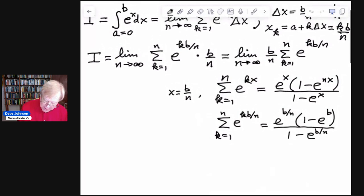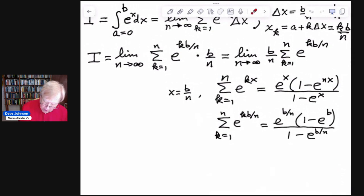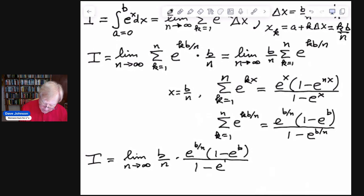So if we substitute that in for this, then what we get is I is equal to limit as n goes to infinity, b over n times, now the summation becomes e to the b over n times 1 minus e to the b divide by 1 minus e to the b over n.